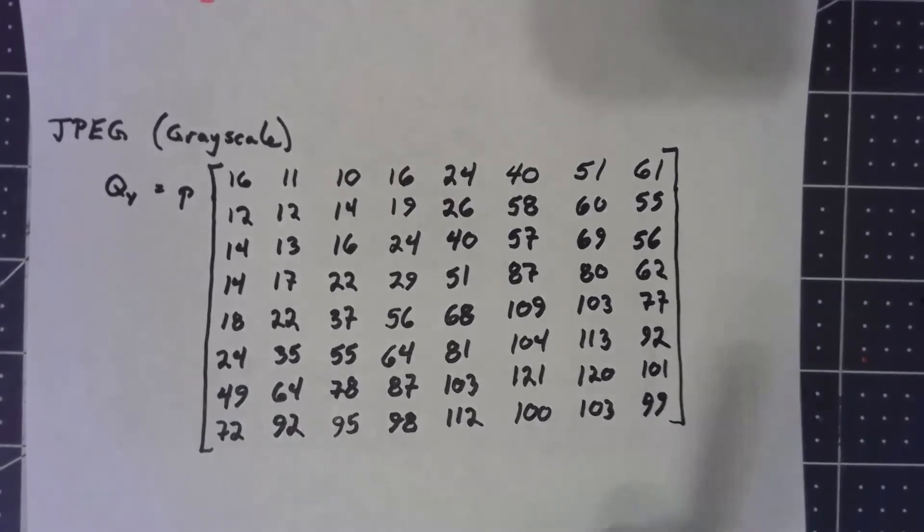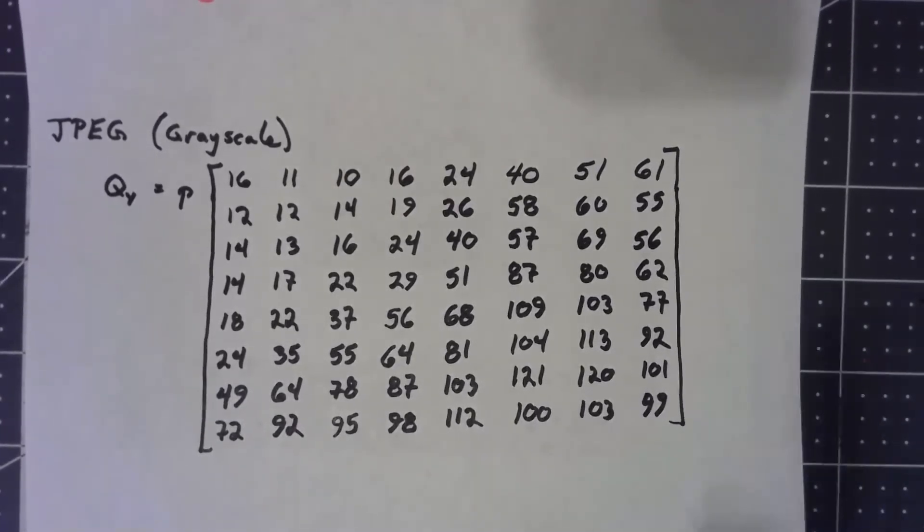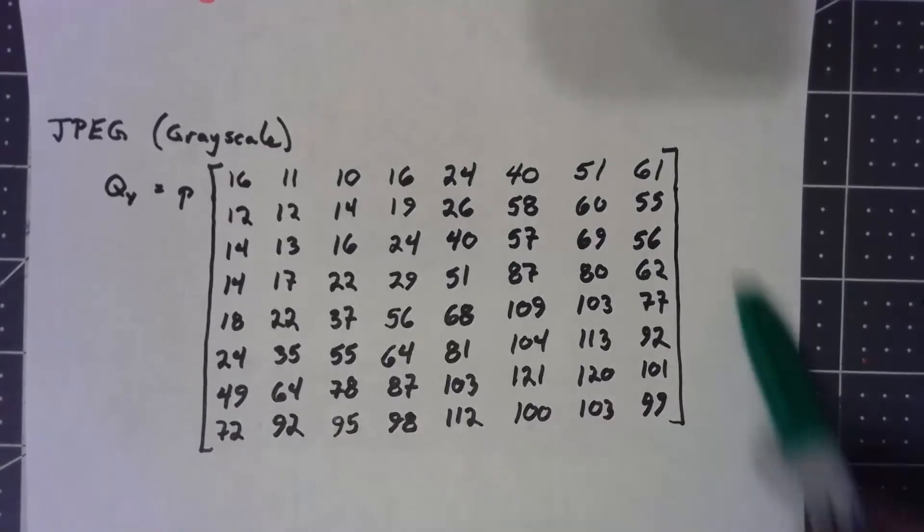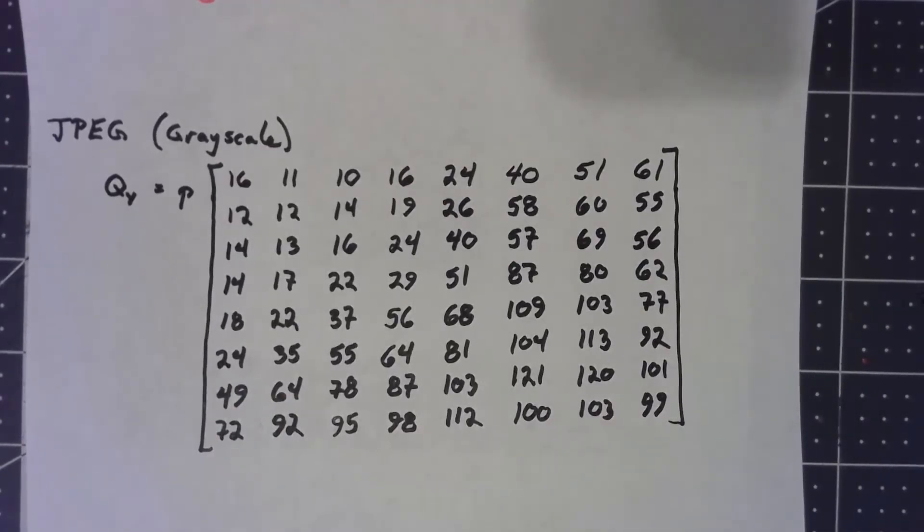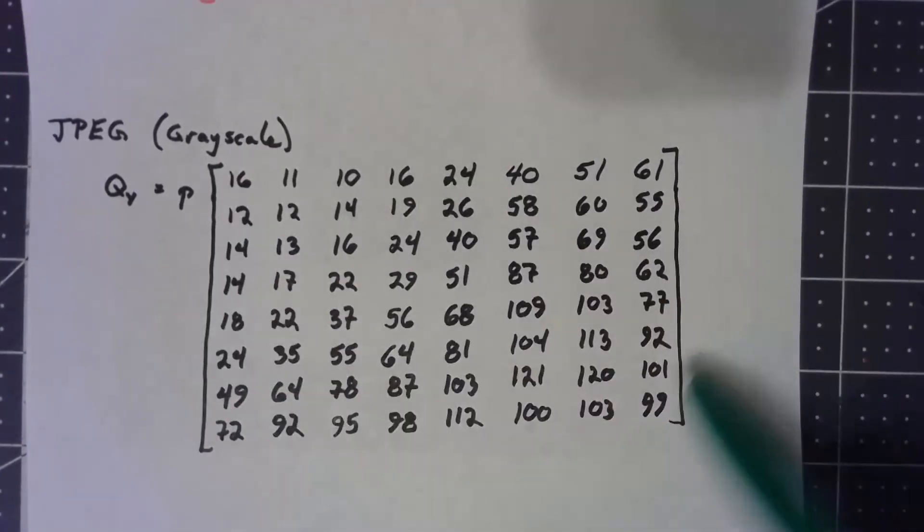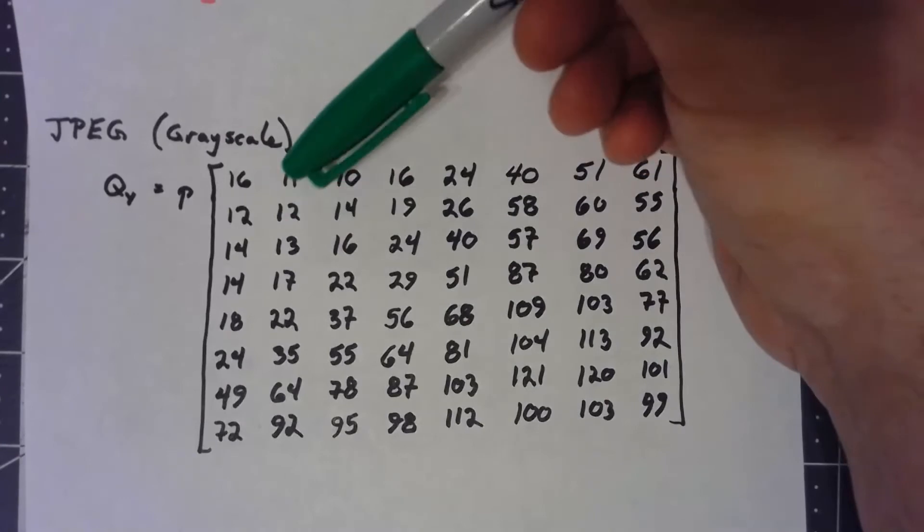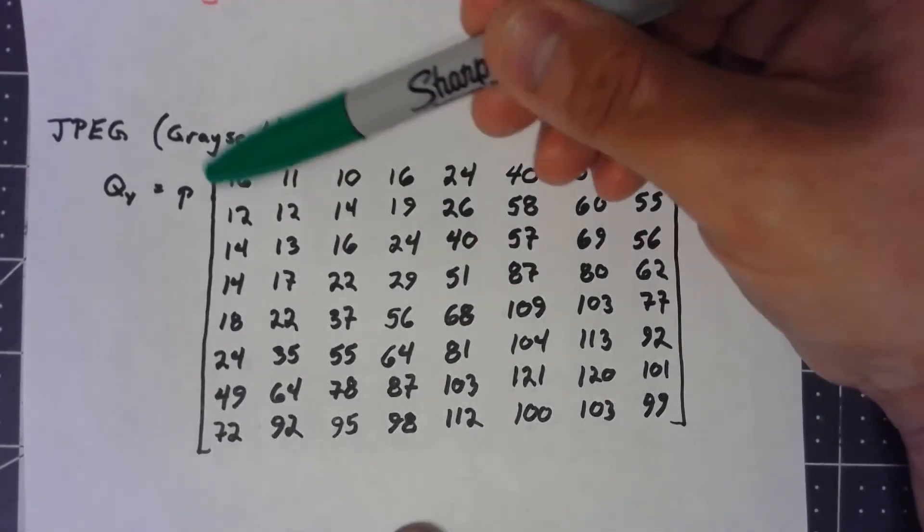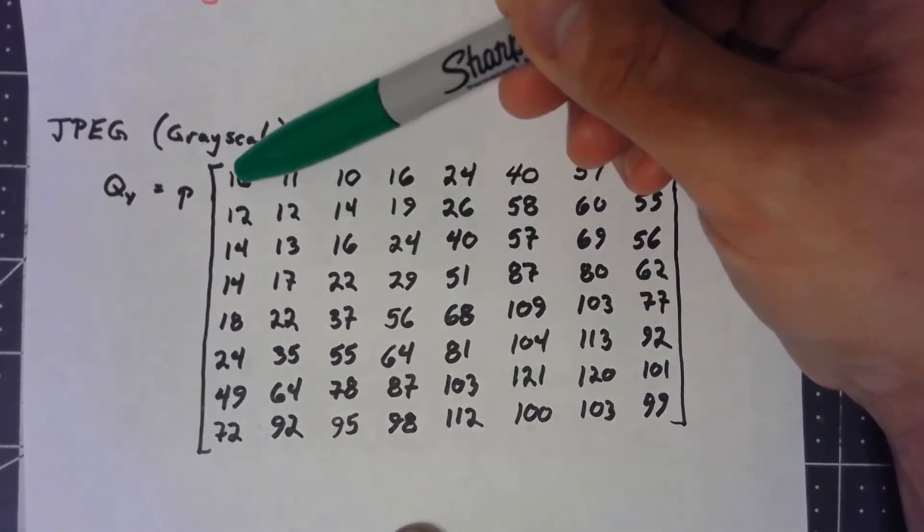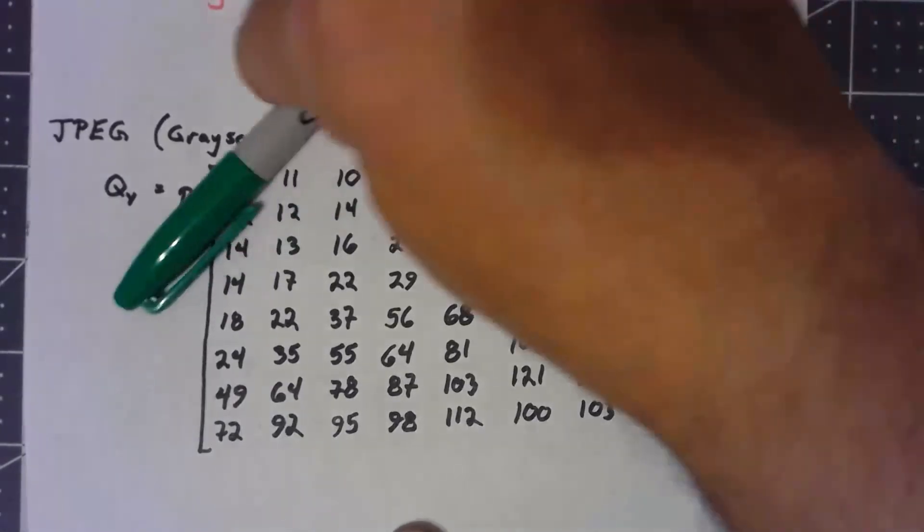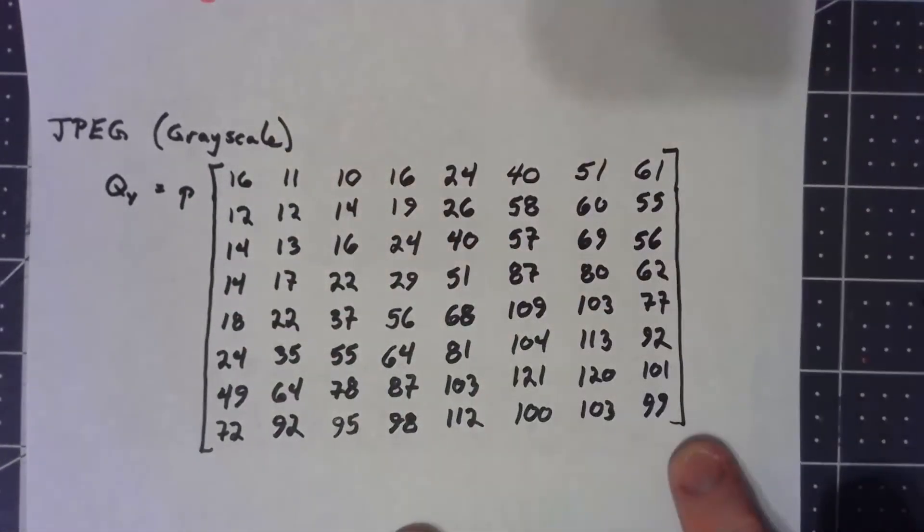So they've done experiments using actual human eyes and how people see things, and they suggest this matrix here. We have different levels of quantization depending on how important they are. As you can generally see, for the most part, and there are some exceptions, but the closer to the upper left this thing is, the lower the number is, and it gets bigger and bigger as we go down towards the lower right.